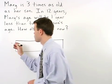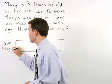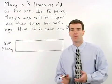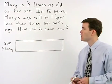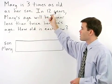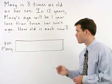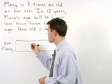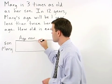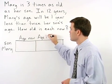I'm going to put the son first, and then Mary, even though the order here doesn't matter. So what do we know about Mary and her son? We know something about their ages now, and we know something about their ages in twelve years. So that's what we put across the top of our chart: age now, and age in twelve years.